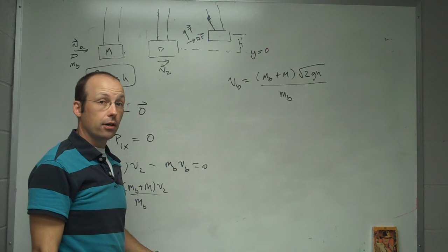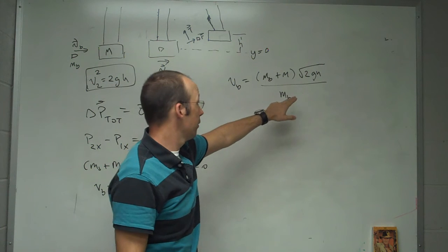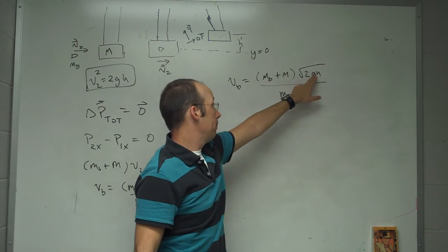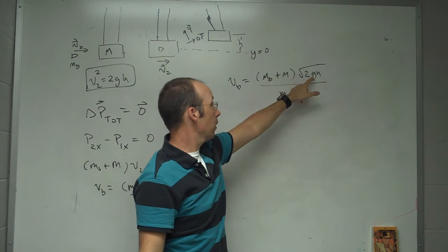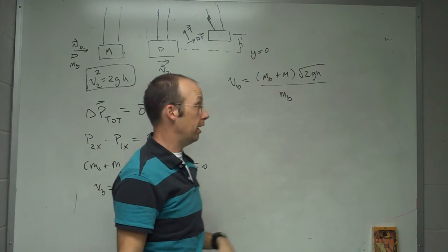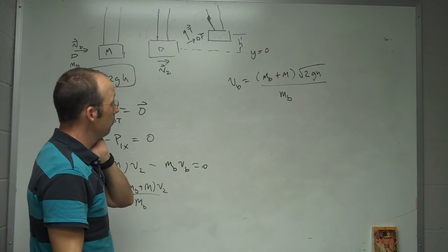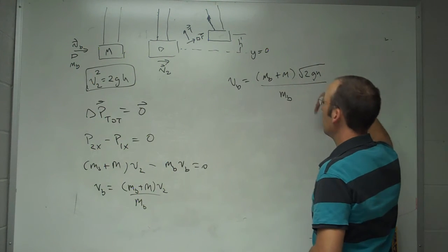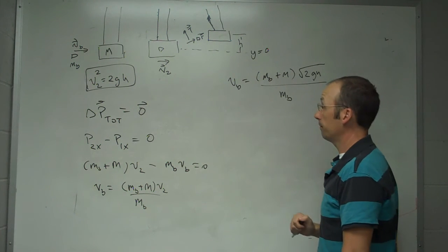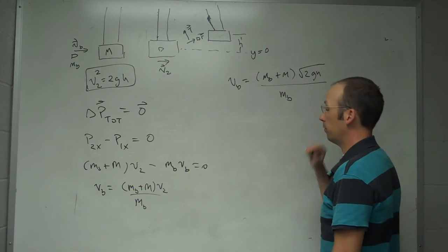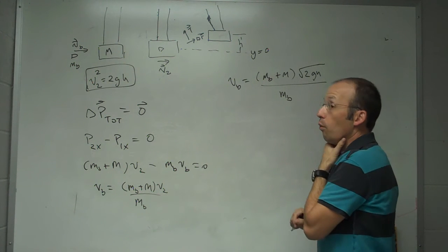Does this have the correct units? Well, I have kilograms divided by kilograms. And this is meters per second squared times meter, meter squared per second squared, take the square root. So it does give me units of velocity, so that's good. And so you can see that the higher the block goes up indicates a faster moving bullet. And you can put in some numbers here, but I'm not going to do that.